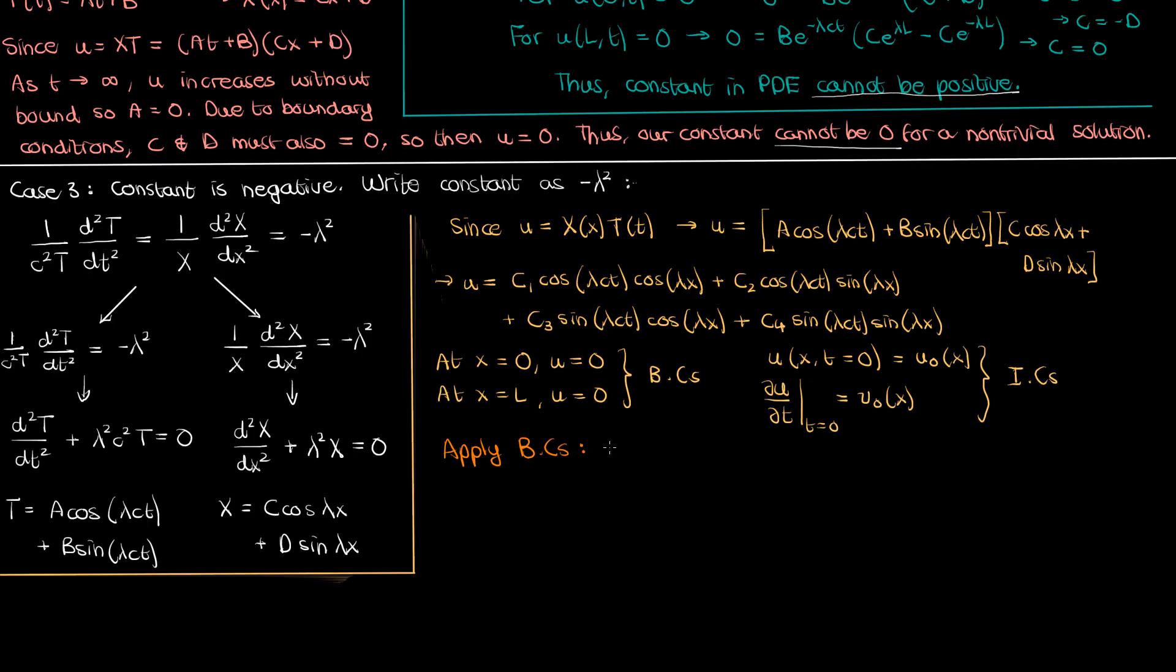Let's apply the simplest boundary condition first. When x is 0 u is also 0. If we do that the cosines in x become 1 because cosine 0 is 1. In addition the sines in x cancel out because the sine of 0 is 0 leaving us with the following equation. Now time is a continuous real number going from 0 to infinity so the only way to guarantee that the sum of cosine lambda ct and sine lambda ct is 0 for all possible values of time is to have both c1 and c3 equal to 0.